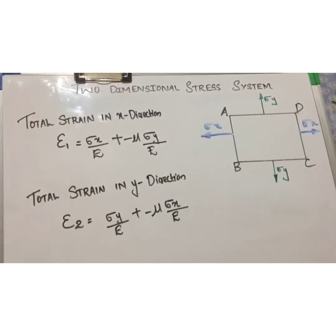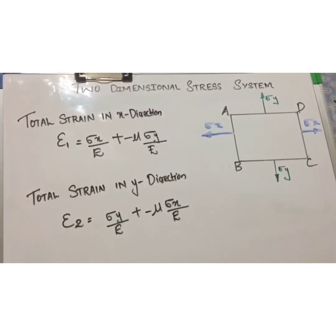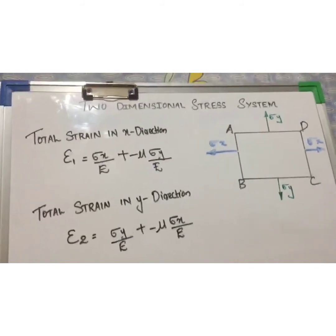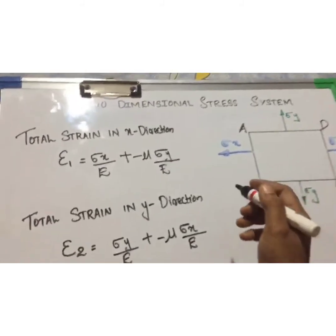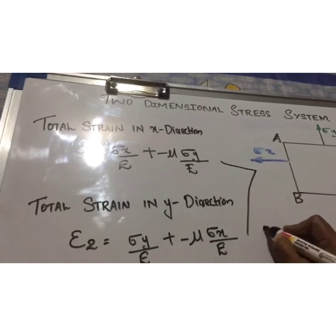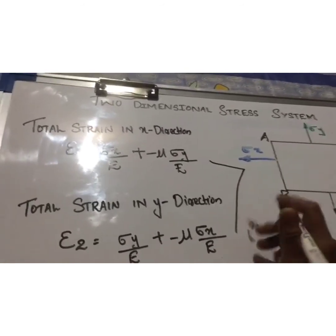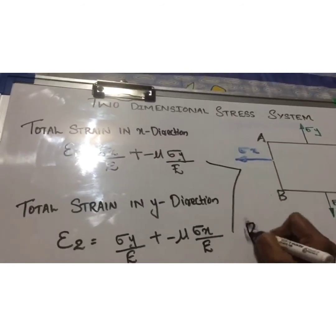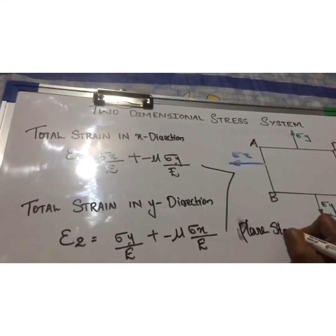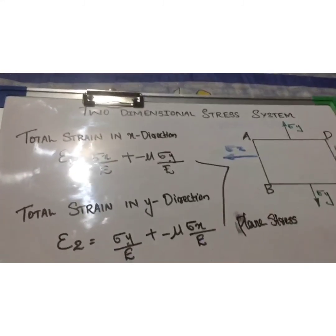This is known as the stress-strain relationship for a two-dimensional stress system. This state of stress is known as plain stress.